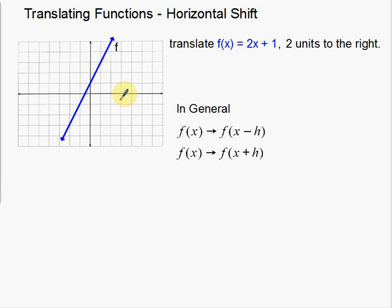The first thing I need to do is find a couple of points on this line. There's a y-intercept at (0, 1). Here's another point at (1, 3), and another at (−1, −1). I'm going to use these three points.